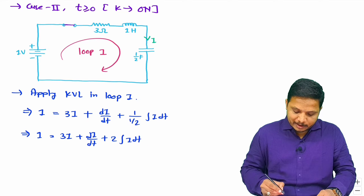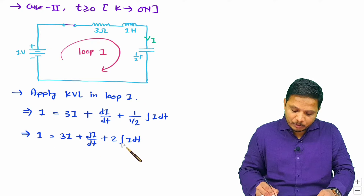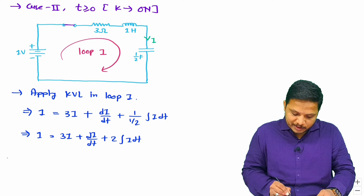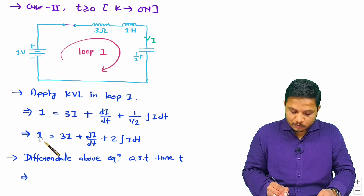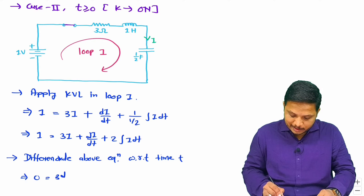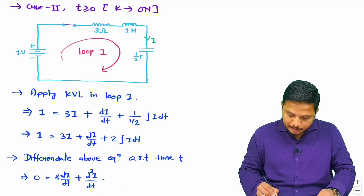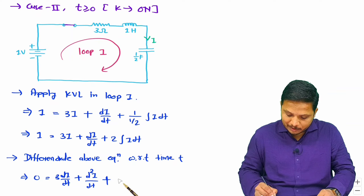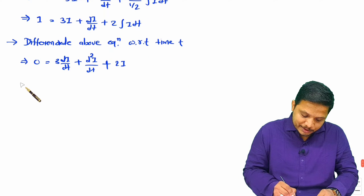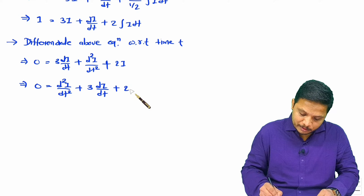Now I need to convert this into a differential equation by removing the integration term. To do so, I differentiate the entire equation with respect to time. Differentiation of 1 is zero, differentiation of 3i is 3·di/dt, differentiation of di/dt is d²i/dt², and differentiation of 2∫i dt is 2i. Rearranging: d²i/dt² + 3·di/dt + 2i = 0.